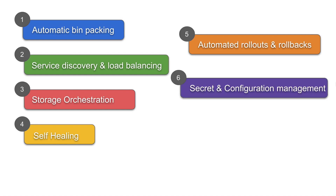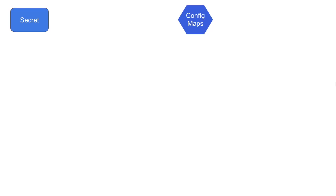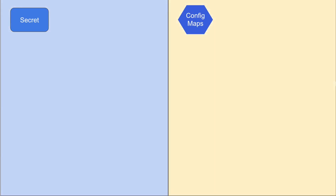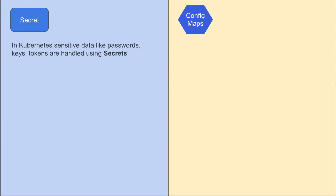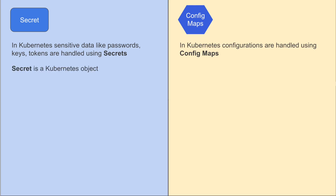The next feature is secret and configuration management. In Kubernetes, we have two objects: secrets and config maps. A secret is an object in Kubernetes that handles sensitive data like passwords, keys, and tokens. A config map is an object in Kubernetes that handles configurations.